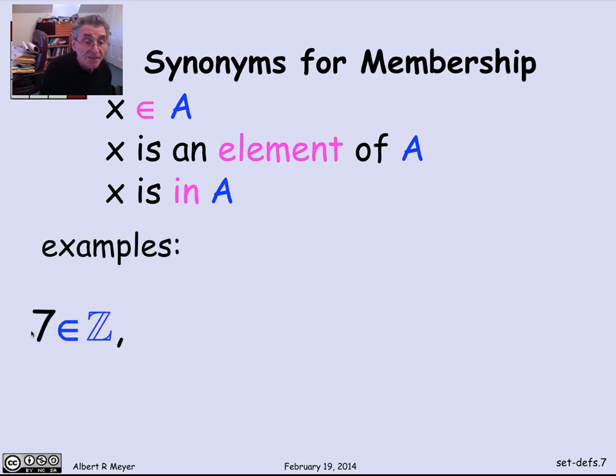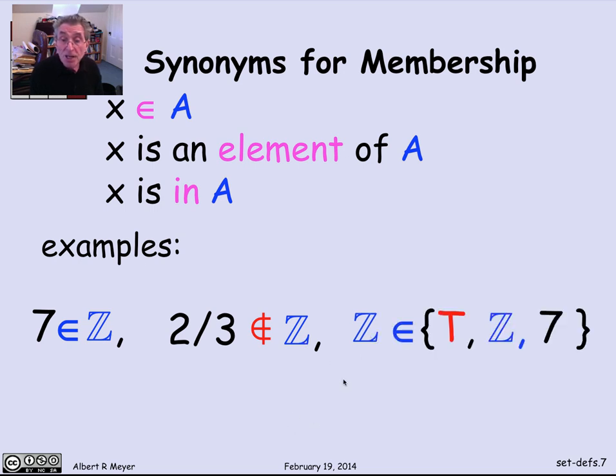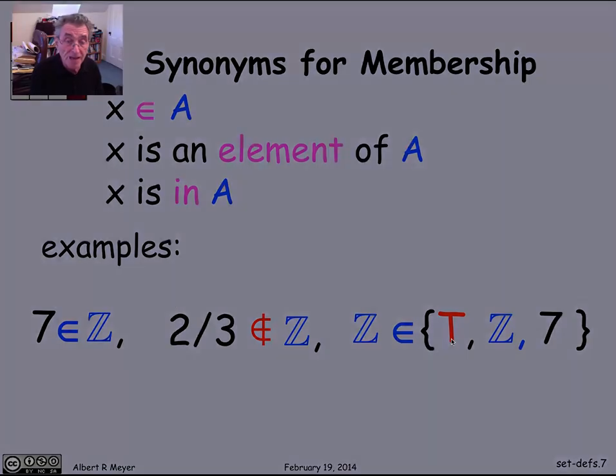So for example, 7 is a member of the integers. Z is our symbol for the integers. 2 thirds is not a member of the integers, because it's a fraction that's not an integer. And on the other hand, the set Z of integers itself is a member of this three element set consisting of the truth value t, the set of all integers, and the element 7. So here's an example where a set can contain sets, quite big ones even. And that's not any problem mathematically.